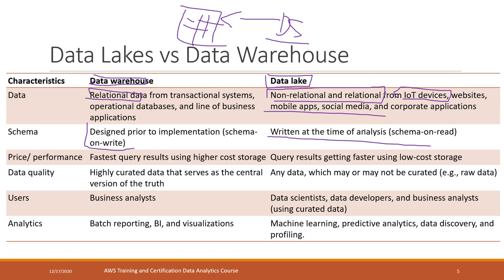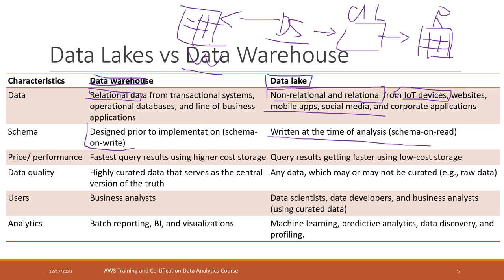For a data lake, because it can store any type of data, you store the data first and when you want to query it, you define the format you want to query — that is called schema on read. For a data warehouse, it is schema on write, meaning you define the structure before writing any data. A data warehouse provides the most efficient querying results at a high cost. For a data lake, querying is getting faster, though it may not be as fast as a data warehouse.